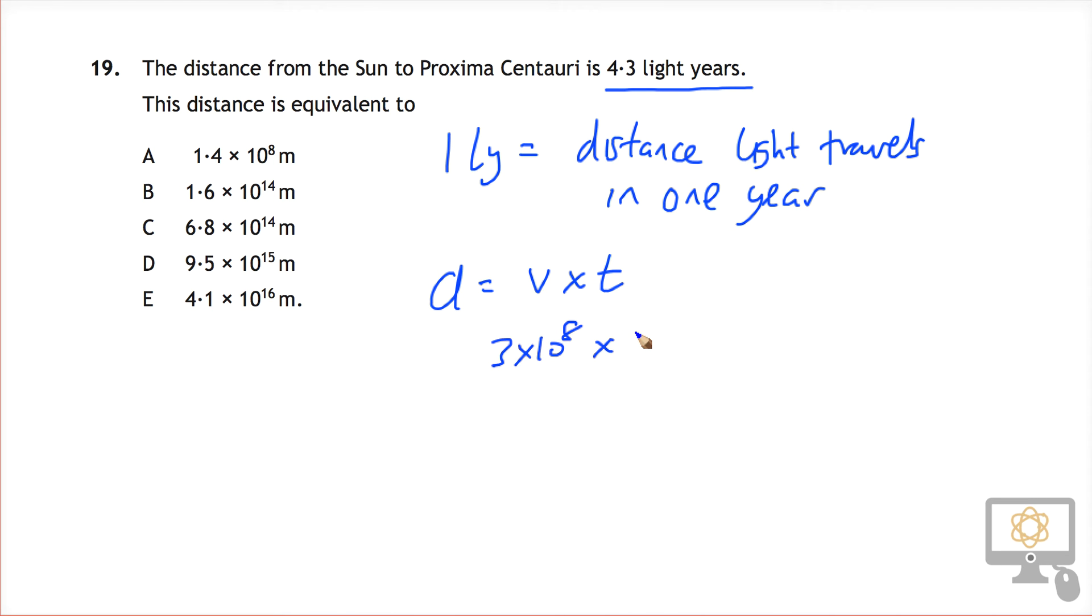So how long is one year in seconds? This is always one of these things you just have to start with at the start and work your way down. So there's 365 days in a year. There are 24 hours in a day. There are 60 minutes in an hour and there are 60 seconds in a minute. So that will convert one day into seconds.